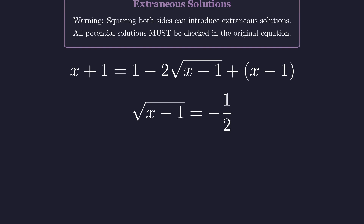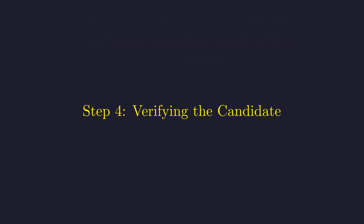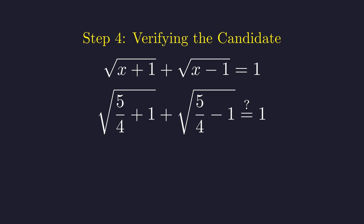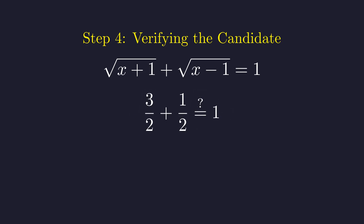Let's ignore the obvious contradiction and square both sides again, just to see where this rabbit hole leads. Squaring both sides gives us x minus 1 equals one fourth, so we get x equals 5/4. The algebra has spoken — but is this actually a solution? Time for the moment of truth. Let's plug x = 5/4 back into the original equation. This becomes square root of 9/4 plus square root of 1/4, which equals 3/2 plus 1/2, equals 2 — which is definitely not 1. Our candidate solution is a fraud.